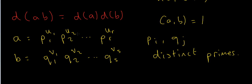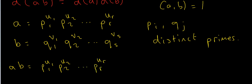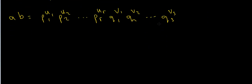Now I'm going to use these prime factorizations to calculate the left-hand side and the right-hand side and show they're the same. If a = p1^u1 * p2^u2 * ... * pr^ur and b = q1^v1 * ... * qs^vs, then a times b is just p1^u1 * p2^u2 * ... * pr^ur * q1^v1 * q2^v2 * ... * qs^vs. So that is the prime factorization of ab, and d(ab) equals what?